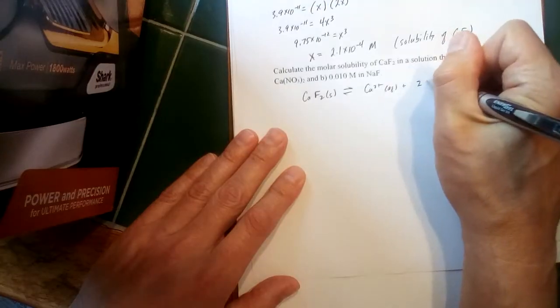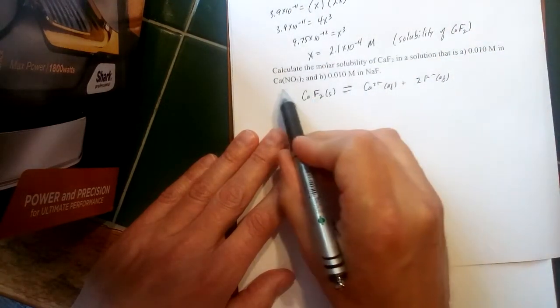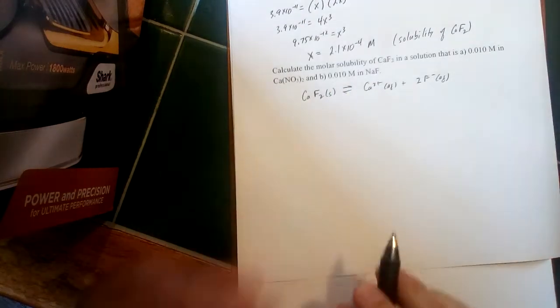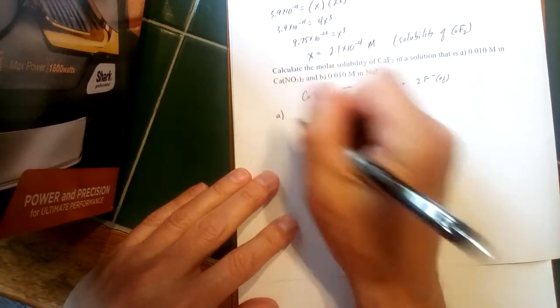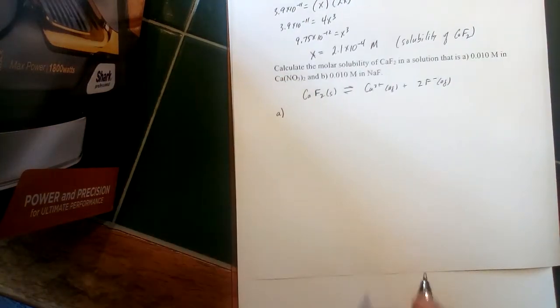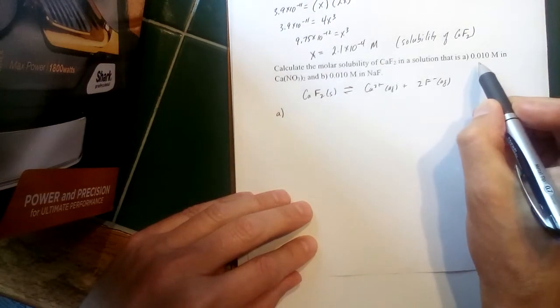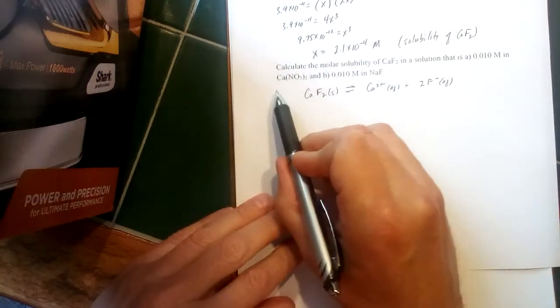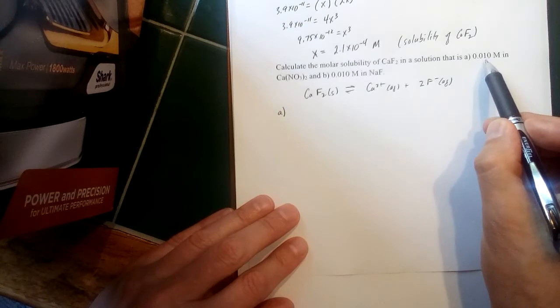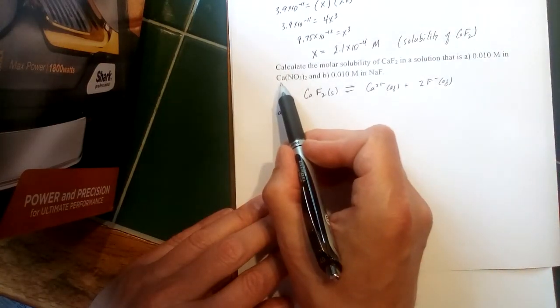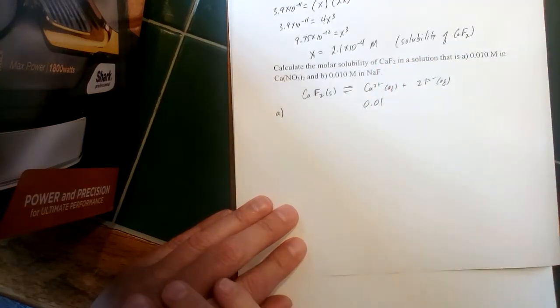Two parts to this second part. Part A we have a common ion in terms of calcium. Part B we have a common ion in terms of fluoride. So for Part A, what's going to change here is instead of x and 2x for our concentrations—Part A we're told we're dissolving the solid calcium fluoride in a solution of calcium nitrate. Its solution is 0.01 molar in calcium nitrate, and there's one calcium per formula unit, so for Part A we're going to have a concentration of 0.01 molar calcium.